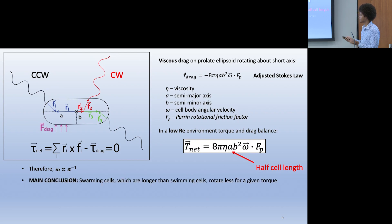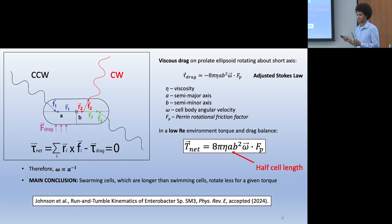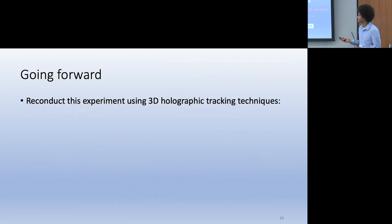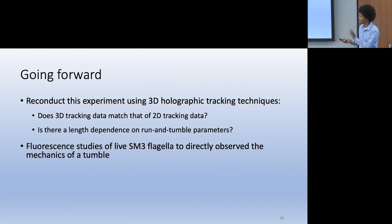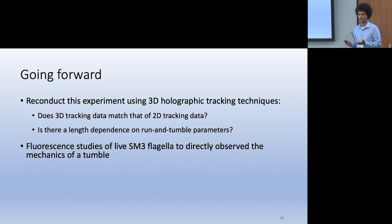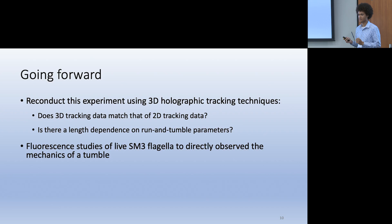The main conclusion is that swarming cells, which are longer than swimming cells on average, rotate less for a given torque. This has recently been accepted and is in the final stages of revision, so hopefully you'll be able to find it in Physical Review. This was all done in 2D, and we want to do 3D tracking techniques, which is the state-of-the-art in microbial tracking. It would also be great to do fluorescent studies of live SM3 flagella to directly observe mechanics that we currently infer from physical intuition.